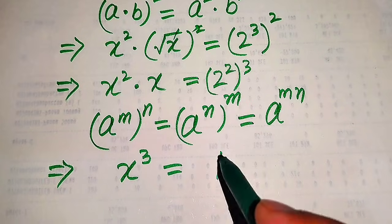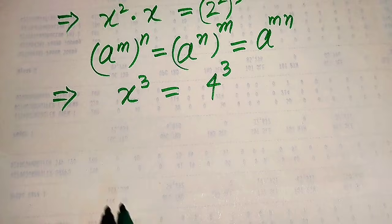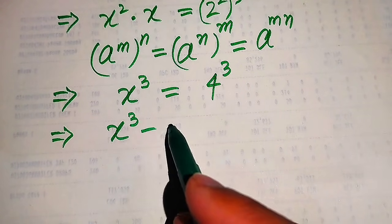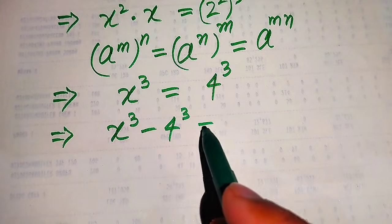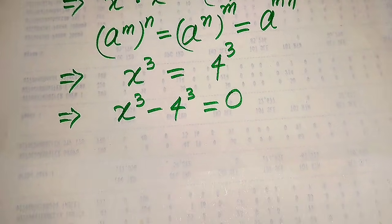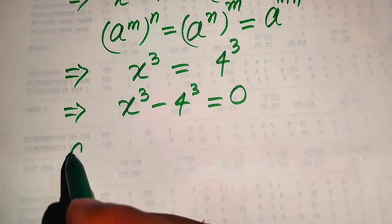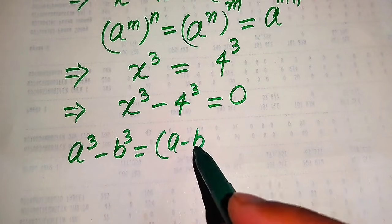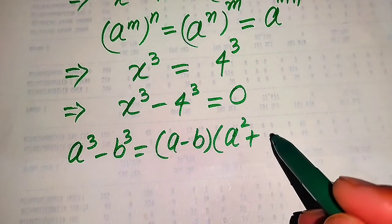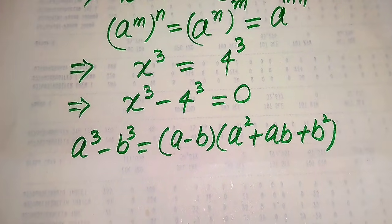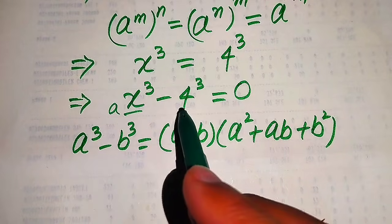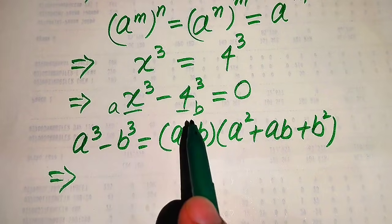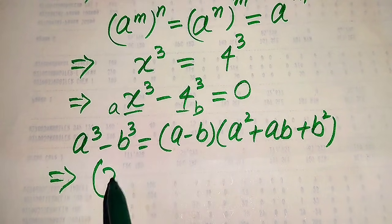Now in the next step, we move 4³ from the right hand side to the left hand side, giving x³ − 4³ = 0. Here we apply the cubic formula: a³ − b³ = (a − b)(a² + ab + b²). You can see here the base of the first term is our a and the base of the second term is our b.